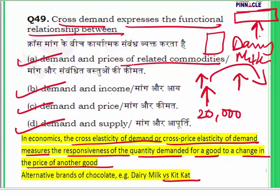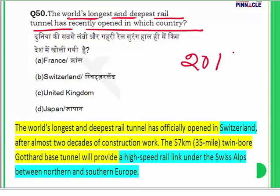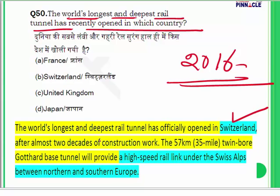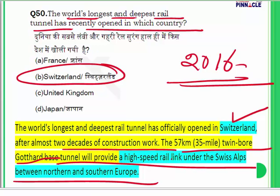Question 50: The world's longest and deepest rail tunnel has recently opened in which country? This is current news from 2016. The world's longest and deepest rail tunnel officially opened in Switzerland after almost two decades of construction. It is the 57-kilometer twin-bore Gotthard Base Tunnel, providing a high-speed link under the Swiss Alps between northern and southern Europe. It is expected to completely change the transportation system of Europe. The answer for question 50 is B — Switzerland. I wish you all the very best, and thank you for watching this lecture.